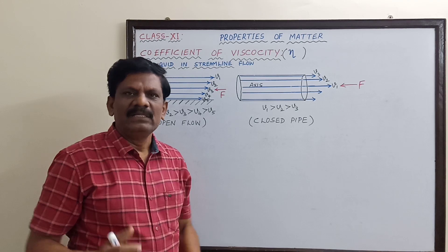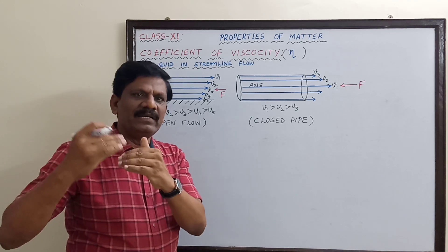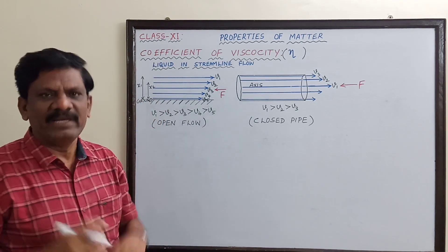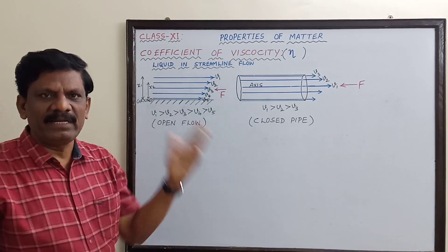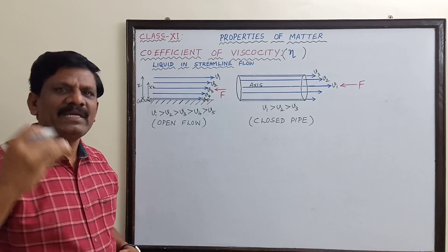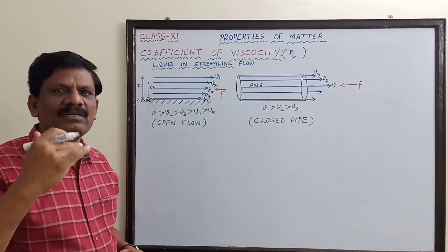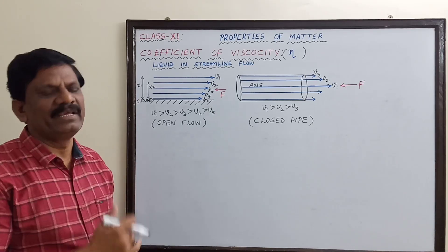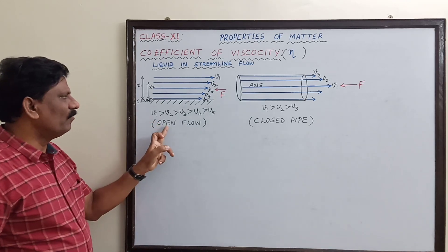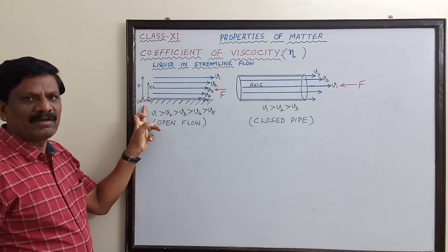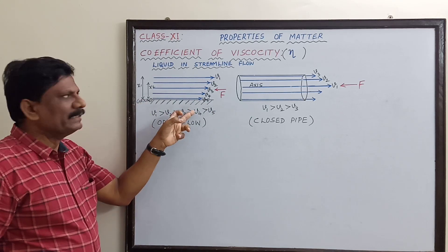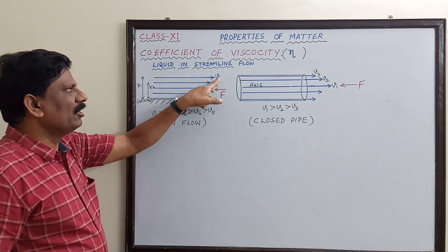it will divide into different layers. The total liquid will not flow together; it will arrange itself into different layers. In the case of liquid or water flowing on the ground in the open, the top layer